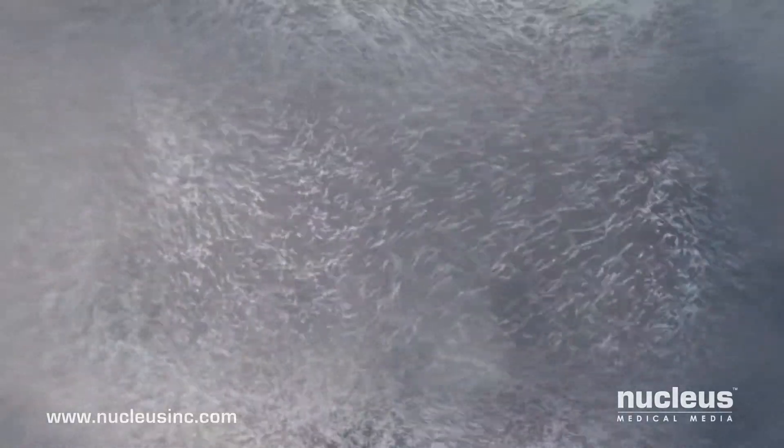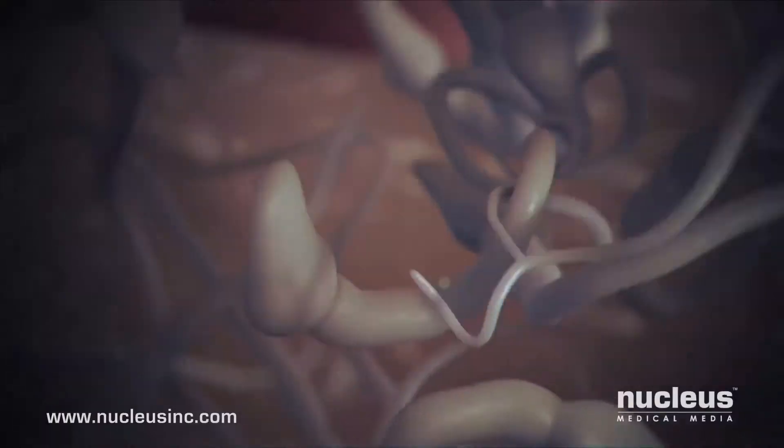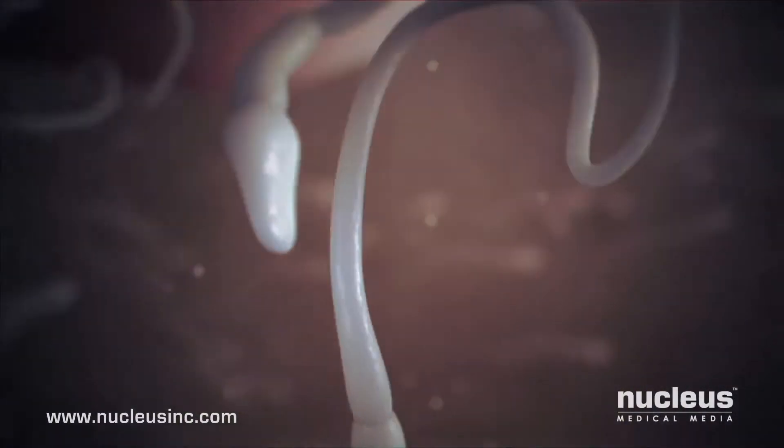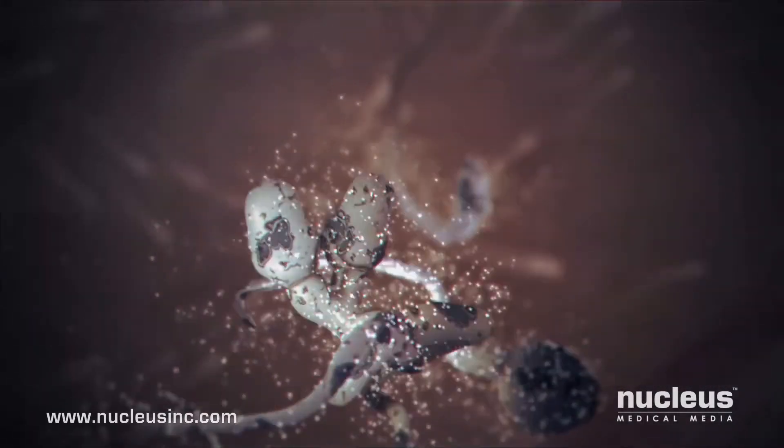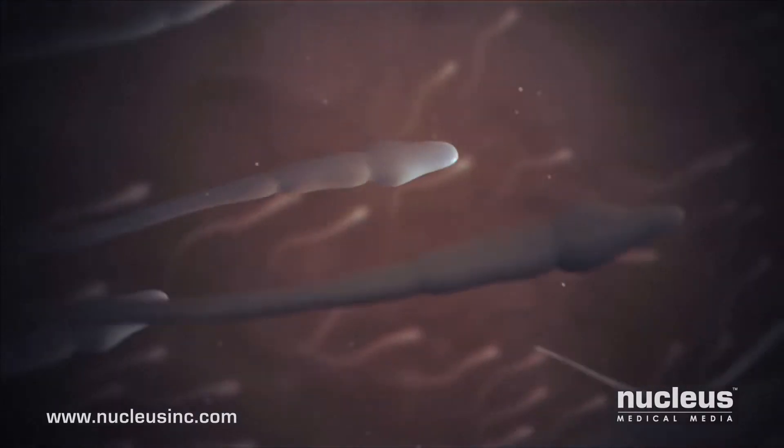A million sperm enter the vagina. Soon afterward, millions of them will either flow out of the vagina or die in its acidic environment. However, many survive because of the protective elements provided in the fluid surrounding them.